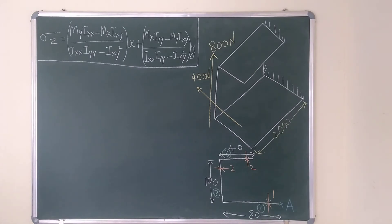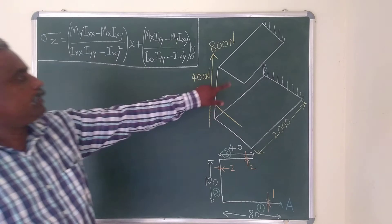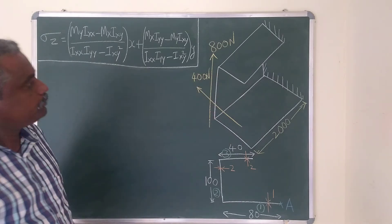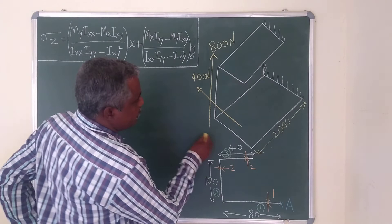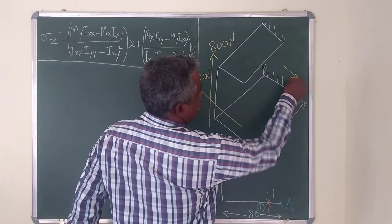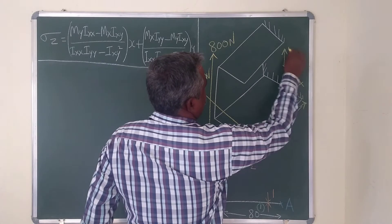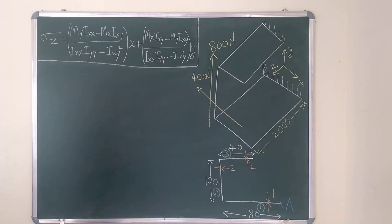The figure shows a cantilever thin-wall open section subjected to loads of 800 Newton and 400 Newton. Let me draw the coordinate system so you can easily understand — this is X, Y, and Z. The loads are subjected in the X direction, Y direction, and X and Y direction.